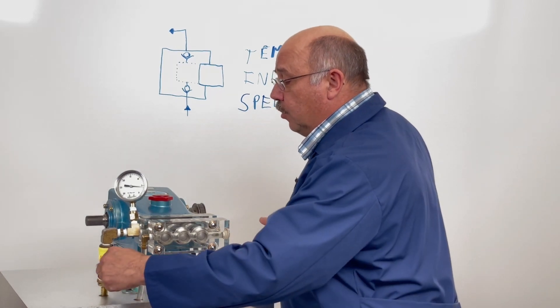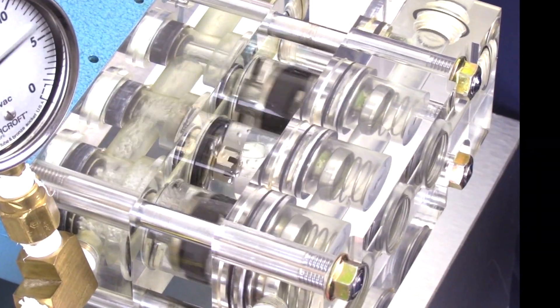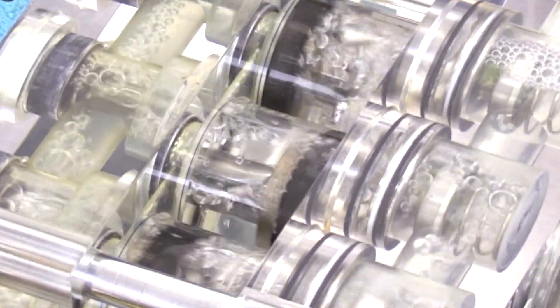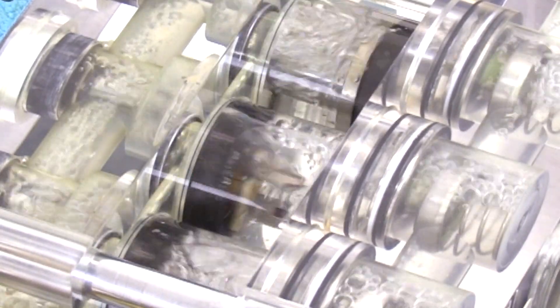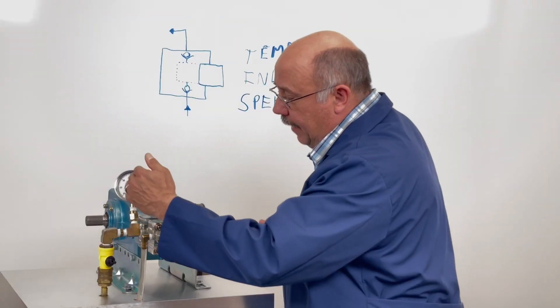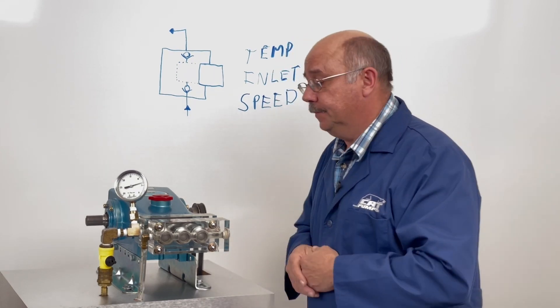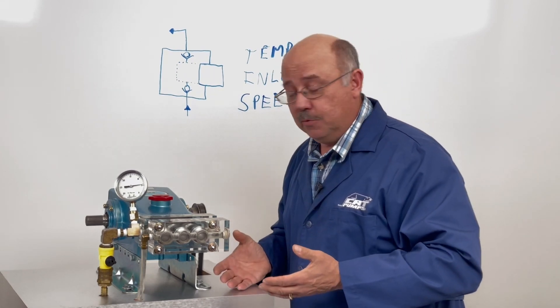As we start to restrict this inlet we can start to see the bubbles forming and the water separating and collapsing and getting this higher vacuum going. And of course then the vacuum goes up higher as well and now we're in a cavitation state on this pump. So this is what you want to avoid.